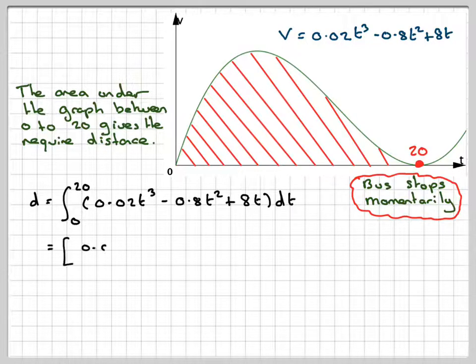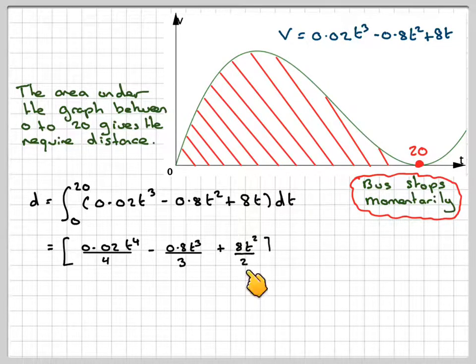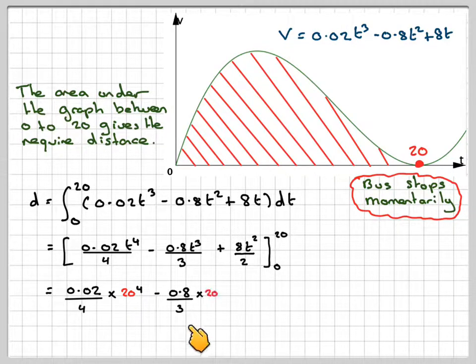Integrating, we're going to have 0.02, add 1 to the power, so we get t to the 4 divided by 4, minus 0.8t cubed divided by 3, plus 8t squared divided by 2, from 0 to 20. Substituting in the limits: 0.02 over 4 times 20 to the 4, minus 0.8 over 3 times 20 cubed, plus 8 over 2 times 20 squared, minus 0. Don't always assume if you substitute 0 into something that it is 0.